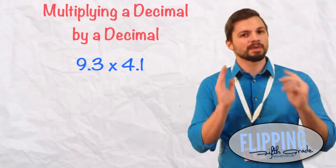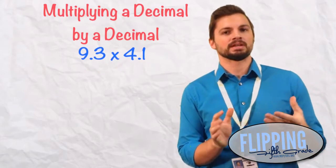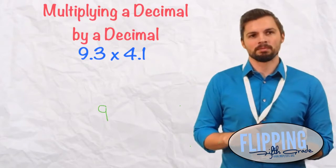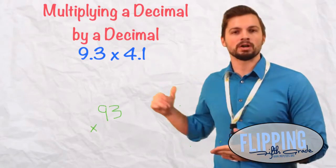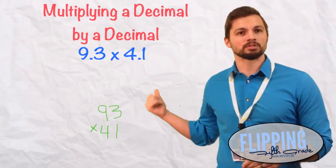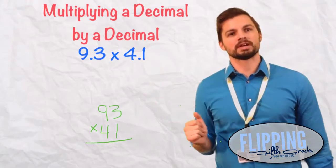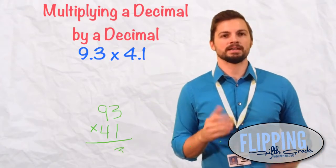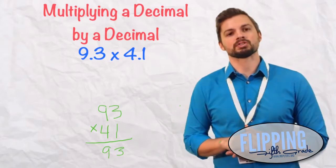When we do this, remember, we're looking at this as if it's 93 times 41, and we're going to use our MoMA method. We're going to multiply first the ones column, start with the bottom ones, which is actually a one. So 1 times 3 is 3, and 1 times 9 is 9. We're done with that column, so you can cross it off.